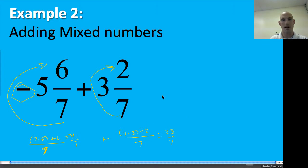So my new problem becomes negative 41 over 7 plus 23 over 7. You see how that's much friendlier than trying to add these mixed numbers? And so what I'm going to do is I'm going to keep the 7 and now it becomes an issue where I'm adding two integers that have opposite signs and this really equals 41 minus 23.